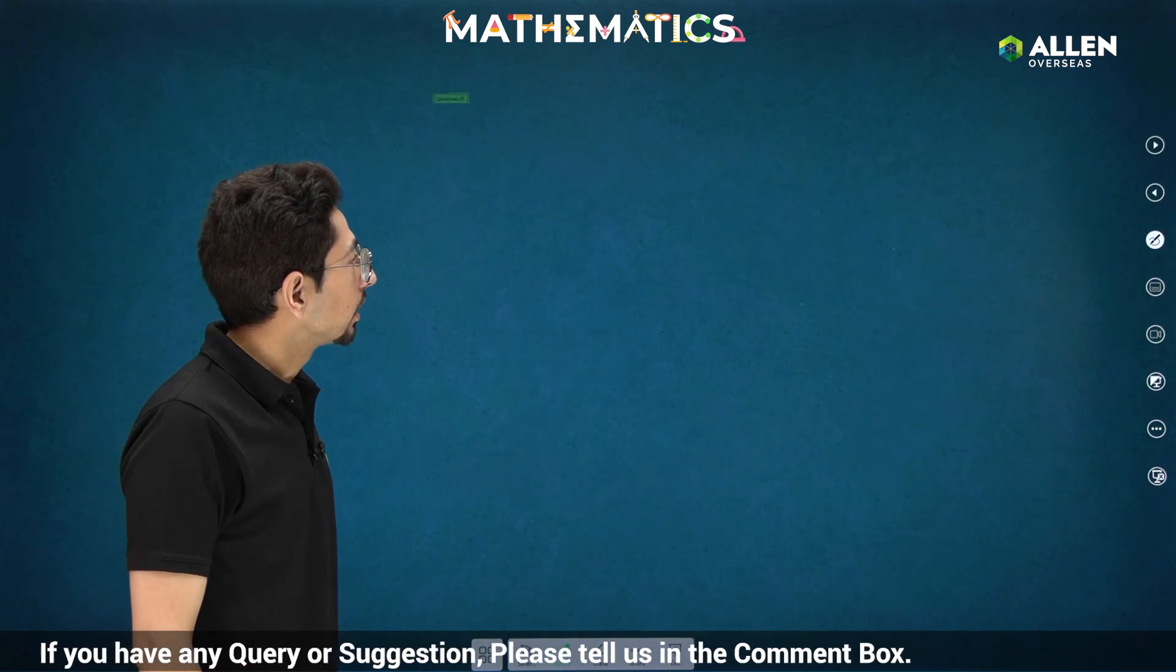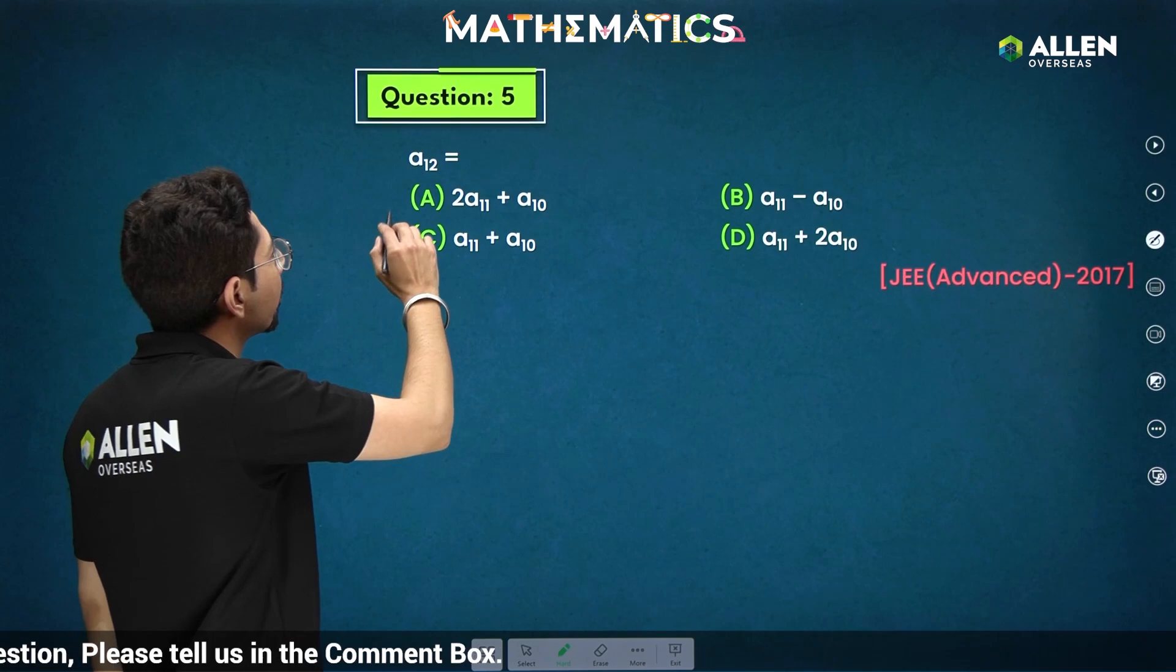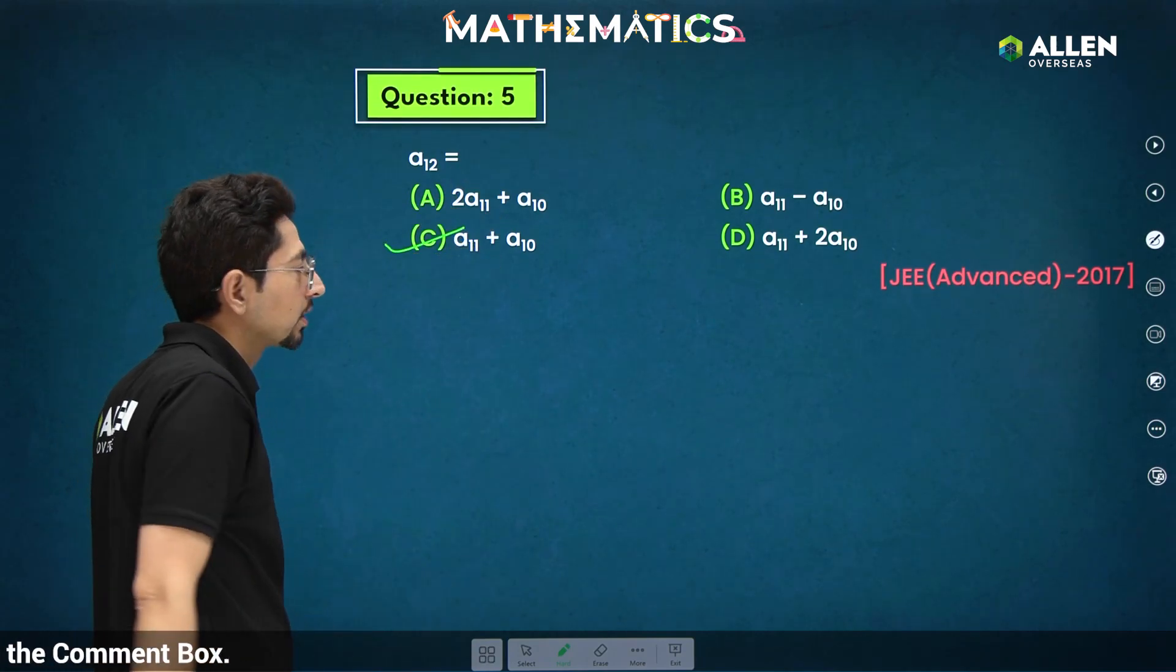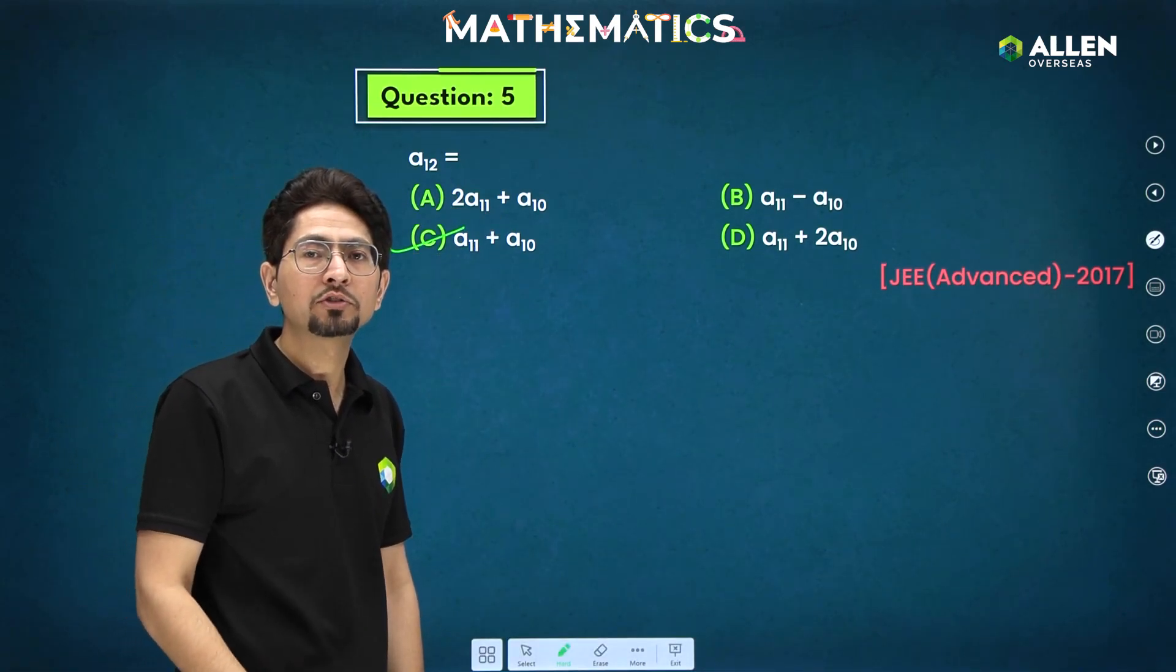Proceeding to an execution that was linked to this one only. That was part of comprehension. So a12 will be a11 plus a10. We have seen that it is sum of previous two terms. Proceeding to next question.